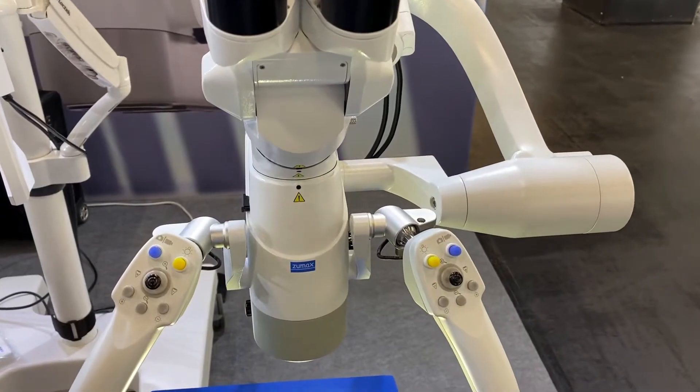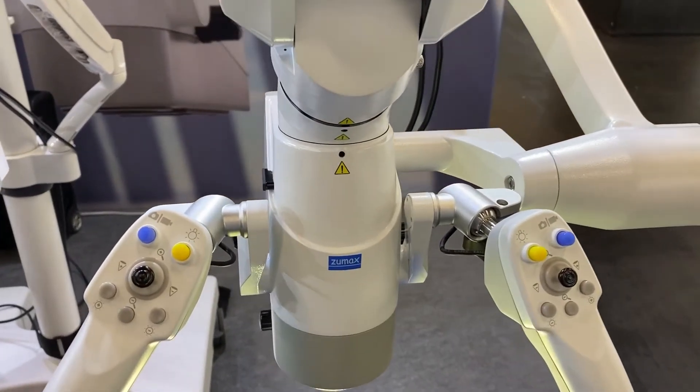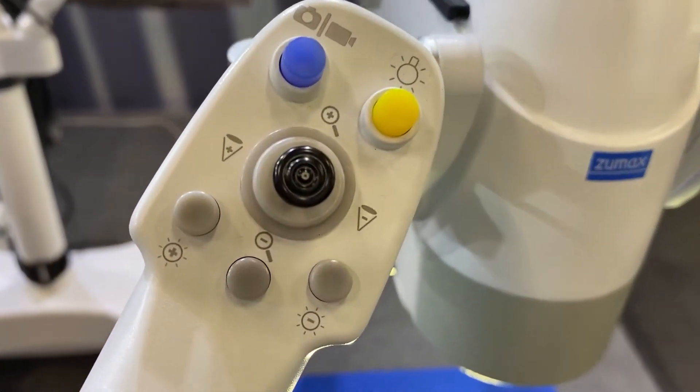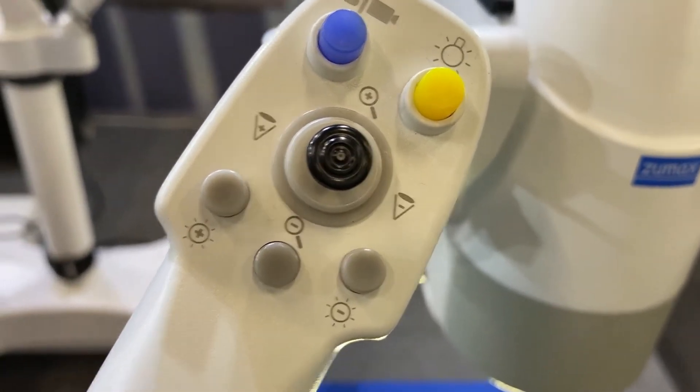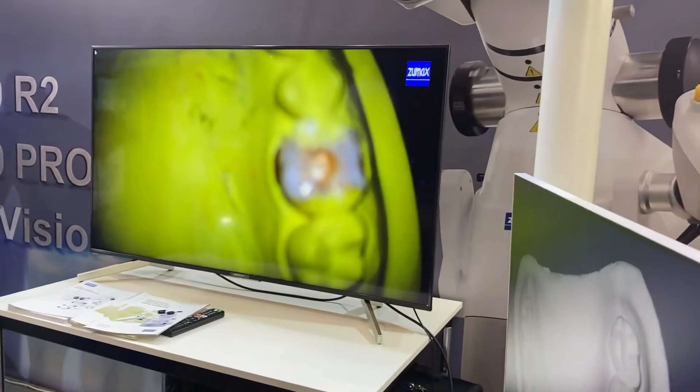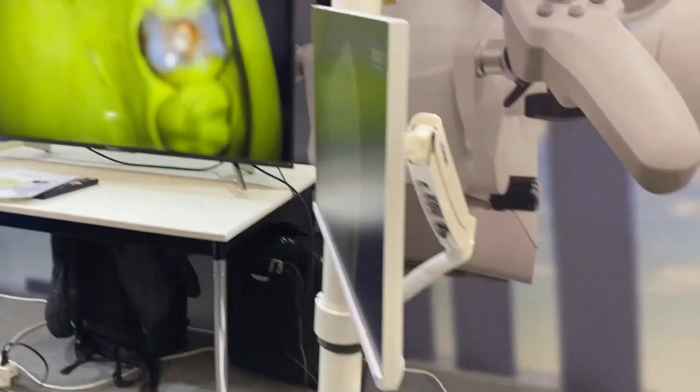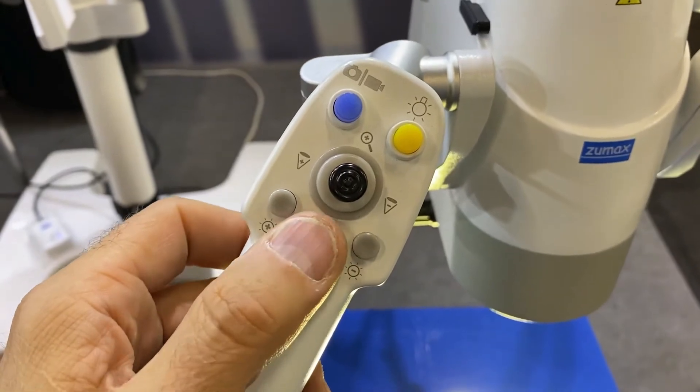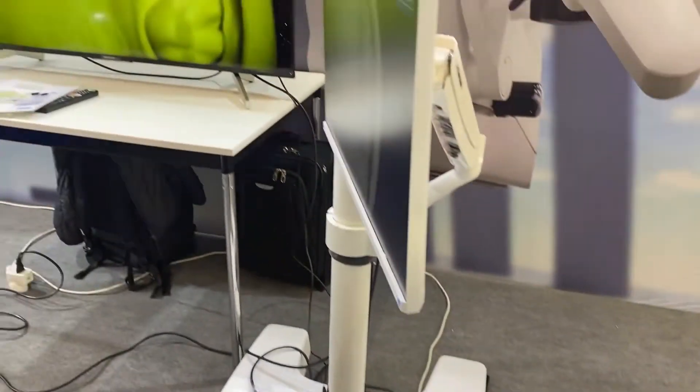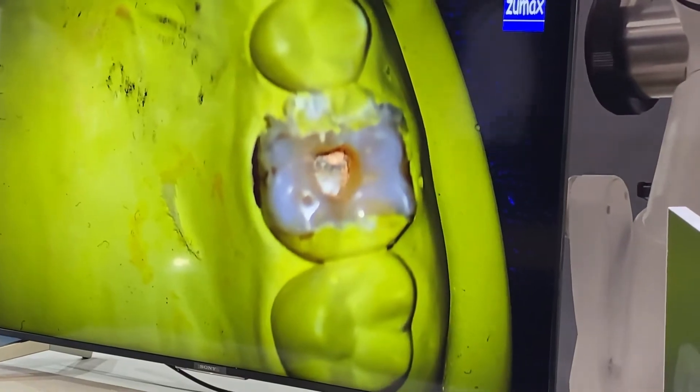And another thing which is new here with this OMS3200R2 is the motorized automatic focus. So basically I took, if you look on the screen here, I took the image out of focus and I will just press this button here one time short and the microscope will automatically bring the image into focus.